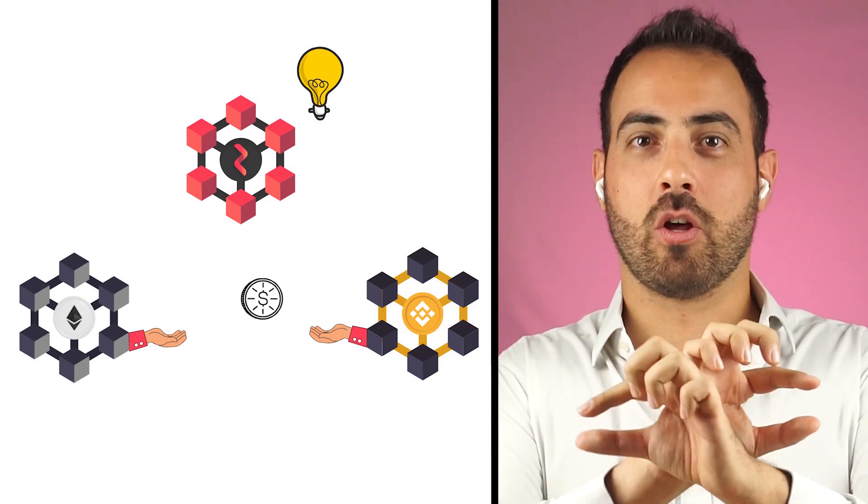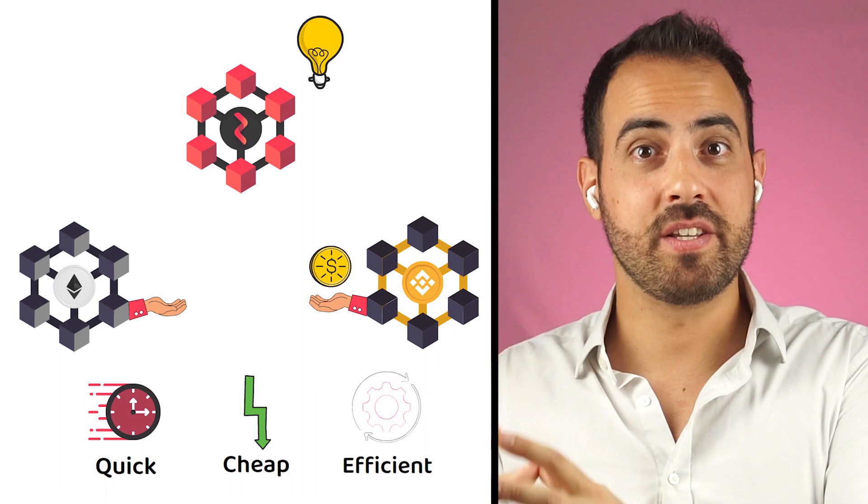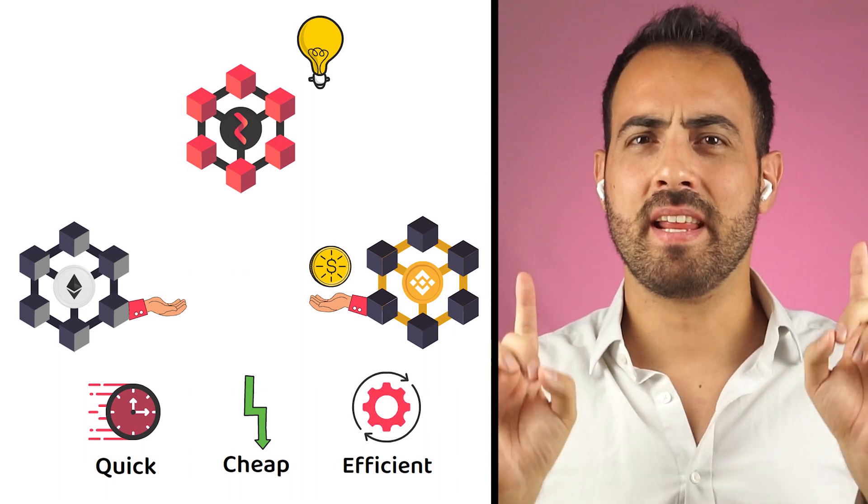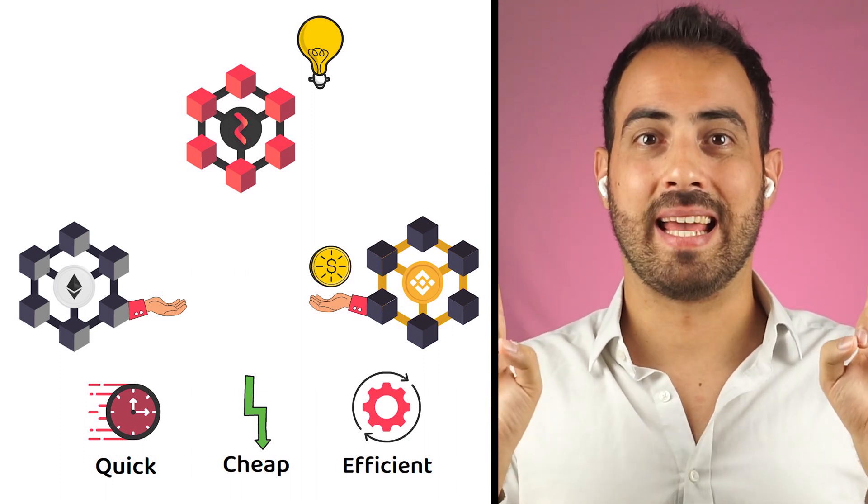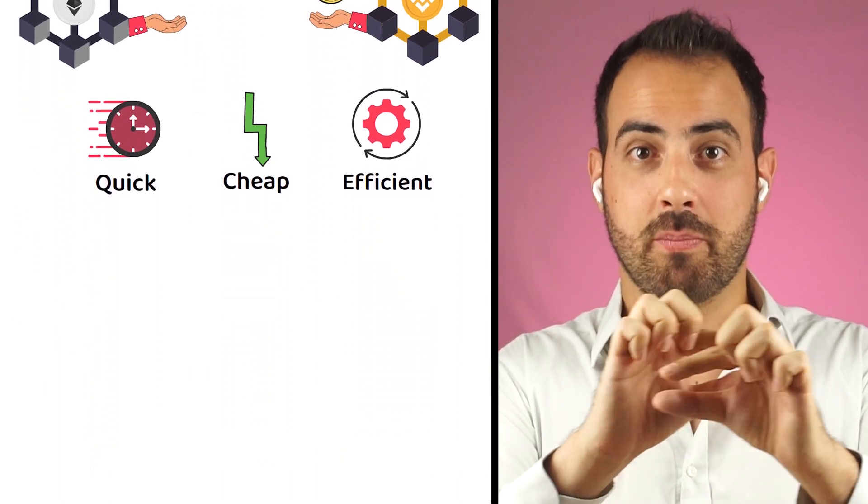The idea behind Router Protocol is to enable the ability to swap assets across different networks in a quick, cheap and efficient manner. The reason why a platform like Router Protocol exists is partially due to the risk of liquidity being spread too thinly across blockchains.